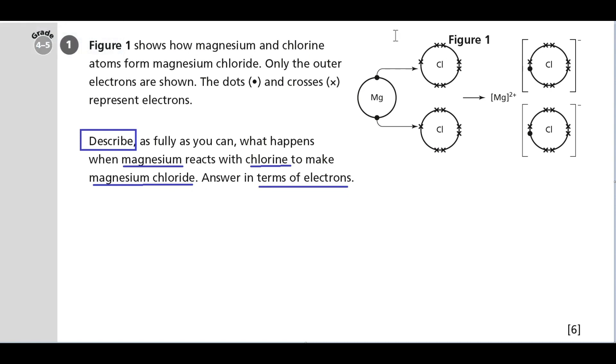So let's look at the dot and cross diagrams. What's going on here? Magnesium loses its two outer shell electrons to become a magnesium 2+ ion. The chlorine atoms each gain one electron from magnesium into their outer shell to become chloride ions with a 1- charge. And it's the electrostatic force of attraction between the magnesium 2+ ion and the chloride 1- ion that actually makes the magnesium chloride.